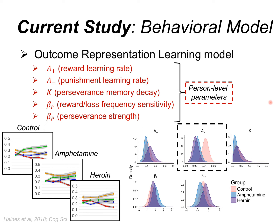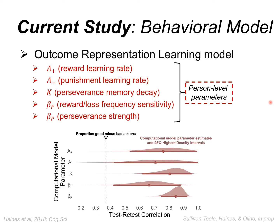We expected something similar here but were looking at individual differences in trait impulsivity rather than group differences. One motivation for the individual differences approach was work led by Holly Sullivan-Toole and Tom Olino at Temple University: applying the ORL model in a test-retest setting with undergrads over a one-month window, we found the model parameters are relatively stable over time — more so than the simple summary statistic of average good versus bad decks selected — giving us confidence that these parameters can meaningfully correlate with traits.